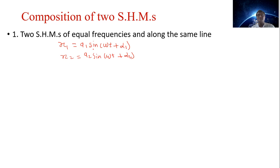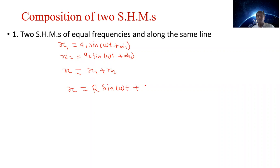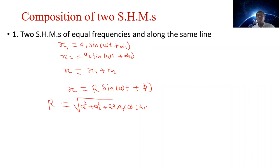These two SHMs are along the same line. Their amplitudes are different, their frequency is the same, and initial phases are different. According to the superposition principle, the resultant displacement is given by X equals X1 plus X2, and finally we get X is equal to R sin(omega t plus phi). Here R is the amplitude of the resultant SHM, where R is equal to the square root of A1 squared plus A2 squared plus 2 A1 A2 cos(alpha 1 minus alpha 2).